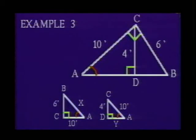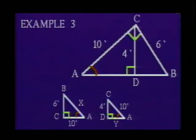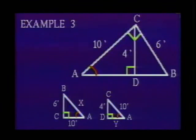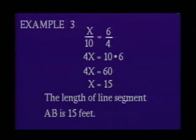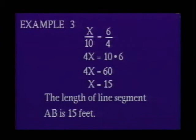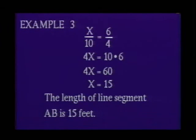We can also see from the drawing that angle A is common to both triangles. Next, let's redraw the similar triangles so that they have the same orientation — this will simplify the problem. Enter the given facts on the drawings and set up the proportions. To find the length of line segment AB, which we shall call X, we write the proportion: X is to 10 as 6 is to 4. Solving, we get 4X = 60, which gives X = 15.